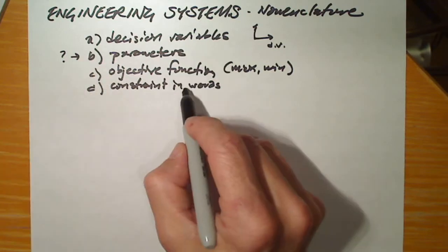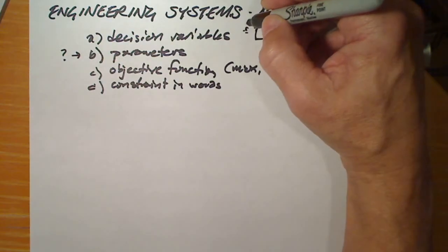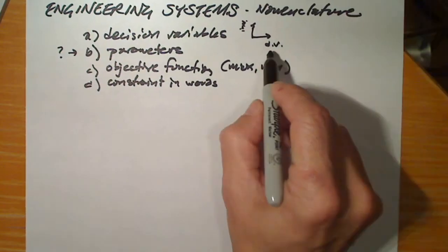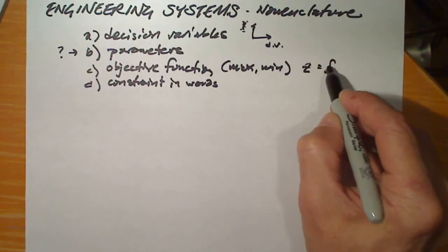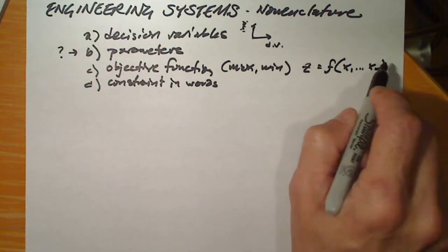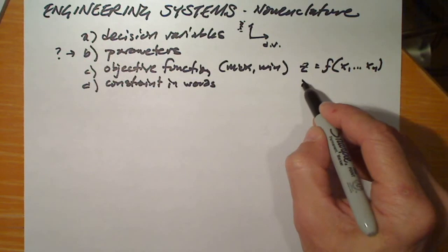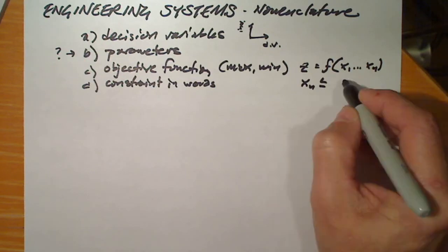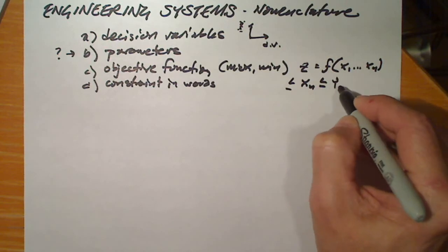Well, the constraints and the objective function are always expressed in terms of the design variables. The objective function, let's say z, will be a function of all the design variables, and as will the constraint equations. The constraint equations will always be expressed in terms of whatever these design variables are going to be.